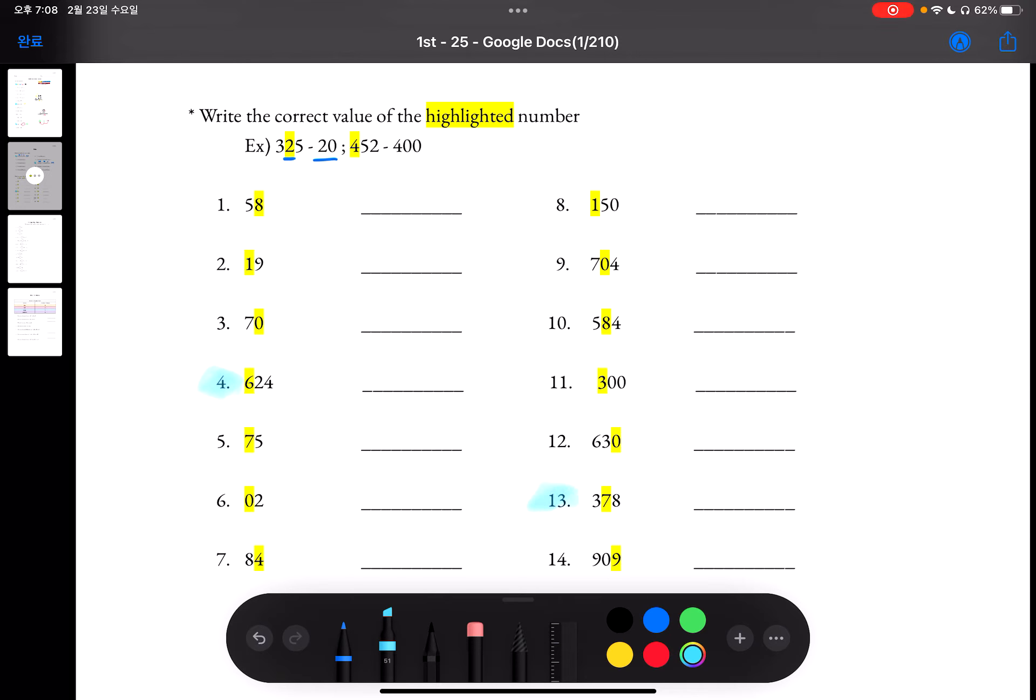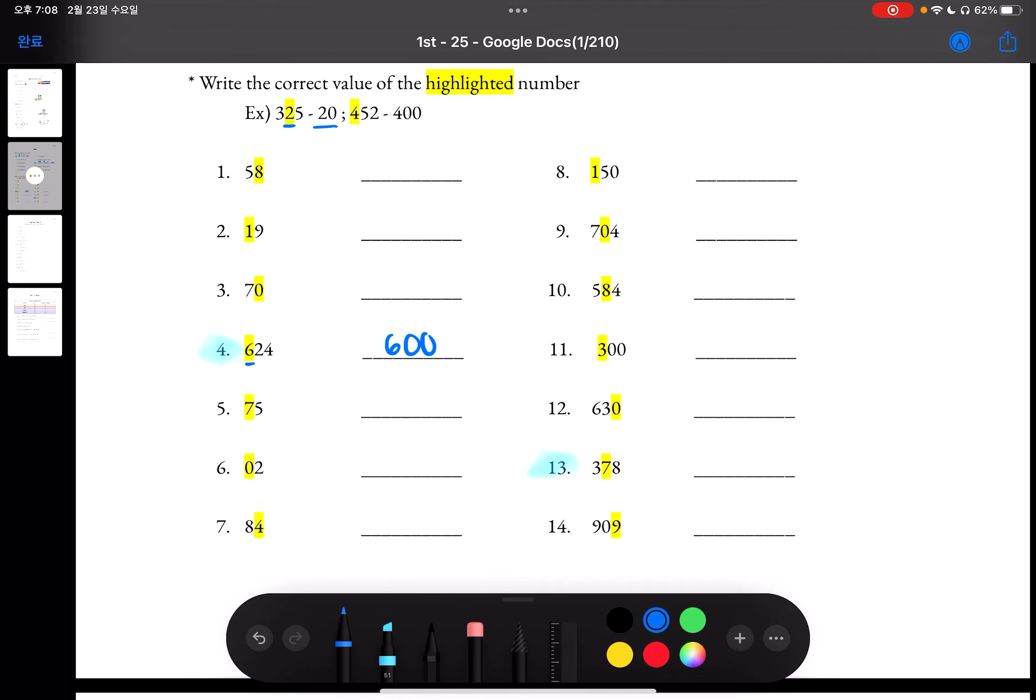Let's look at number 4. Number 4 says 624. And the value of 6, which is highlighted, we see that it's 600. And for number 13, it says 378. And looking at the value of 7, it's in the tens place, so we'll write 70.